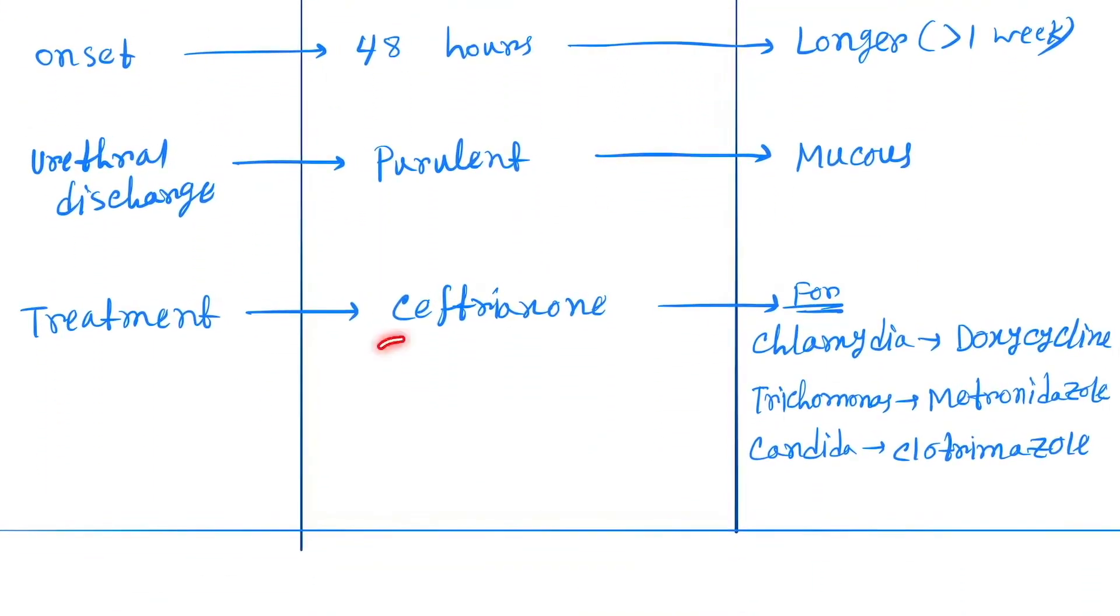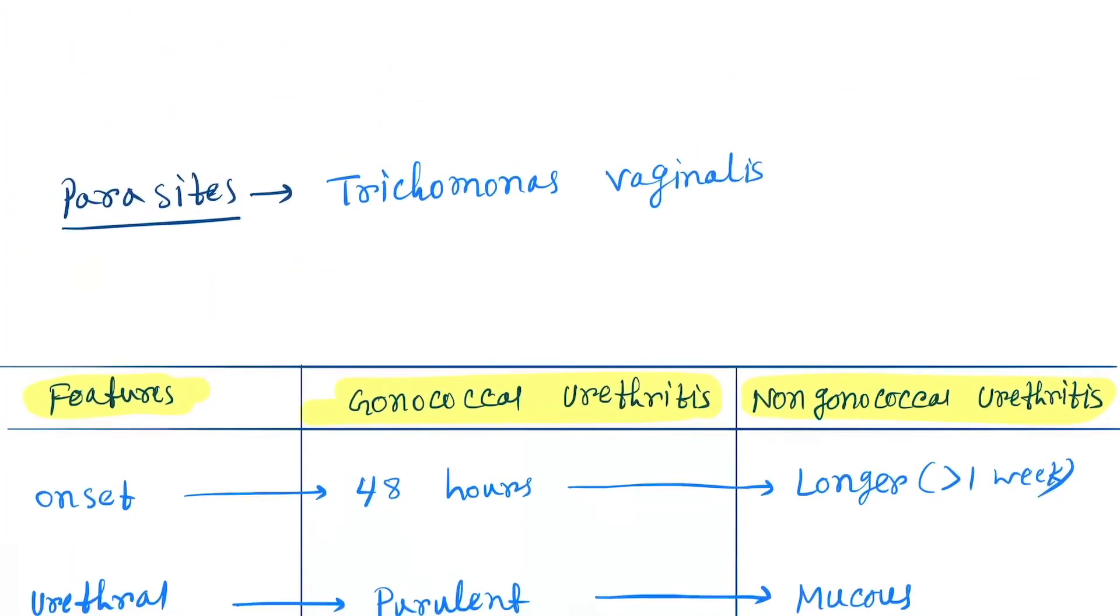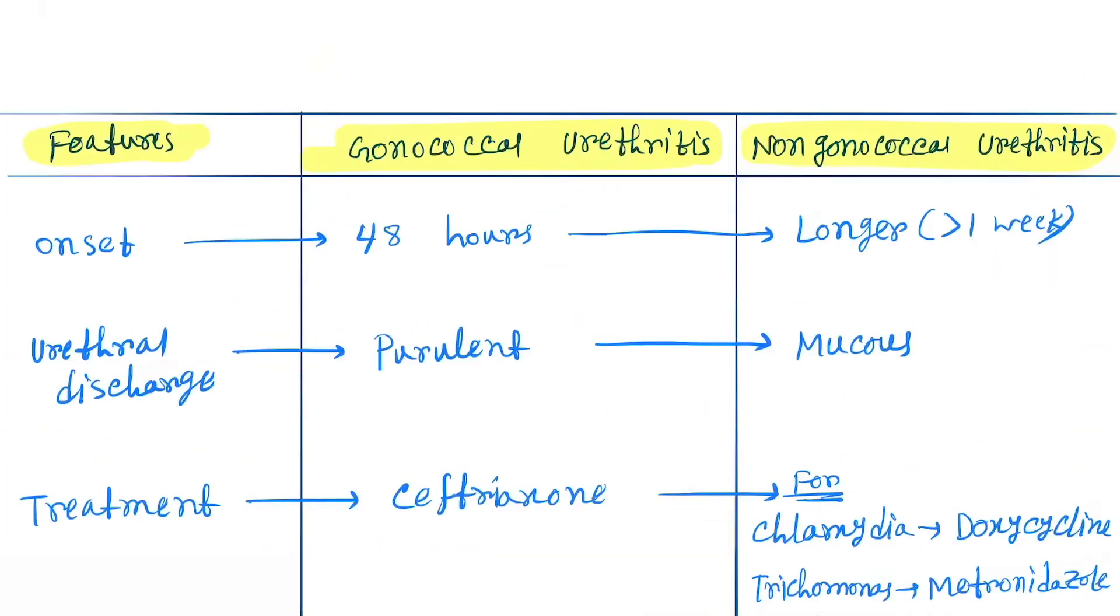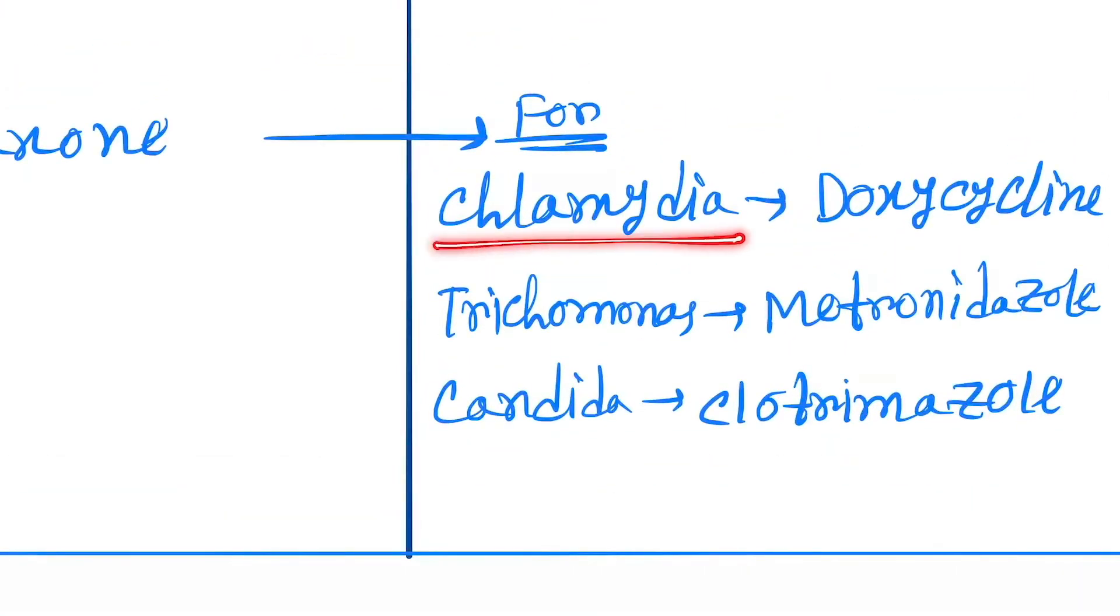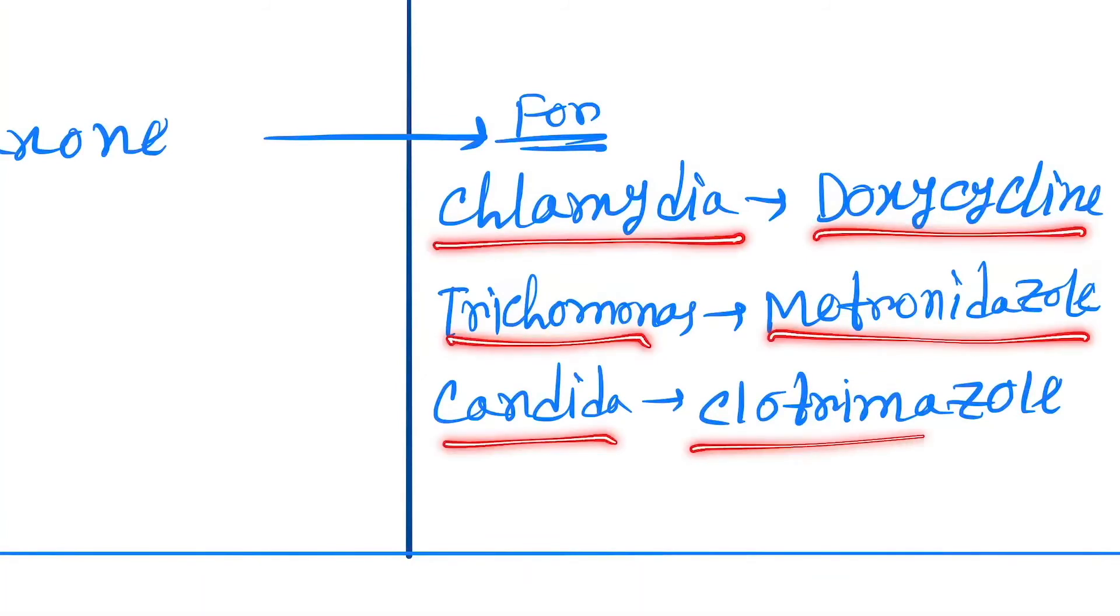Treatment: gonococcal - ceftriaxone, only one drug can treat. But in case of non-gonococcal urethritis, you have to use different drugs for different agents. Chlamydia: doxycycline. Trichomonas: metronidazole. Candida: clotrimazole.